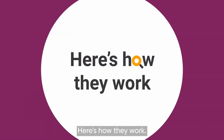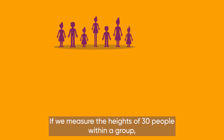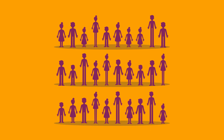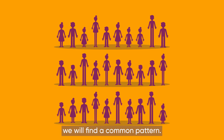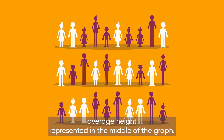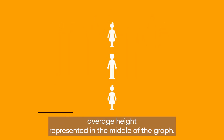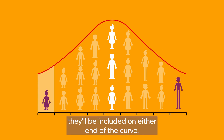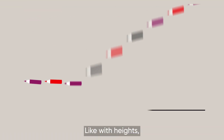Here's how they work. If we measure the heights of 30 people within a group, we'll find a common pattern. The majority of people will be around average height, represented in the middle of the graph. Some people will be much taller, and others much shorter. They'll be included on either end of the curve.